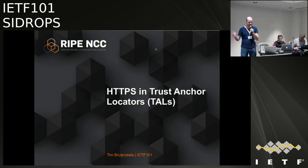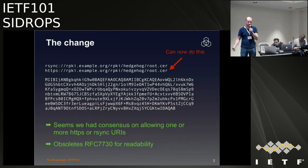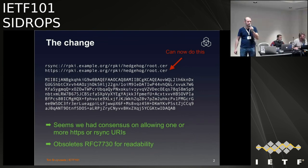This one should be easy — famous last words. HTTPS and trust anchor locators — TALs. The current spec says to have one or more URIs. A new version has been written with my name and George from Microsoft's name on it. I reached out to authors of the original RFC. The change is actually minor: it just says you can use HTTPS now. You could also use only HTTPS the way it's written.